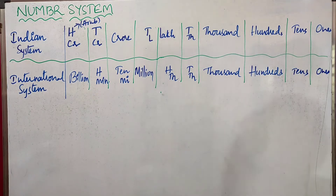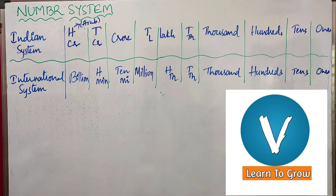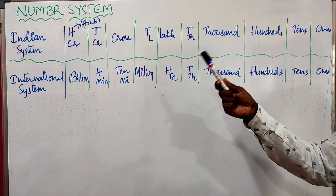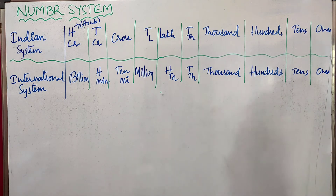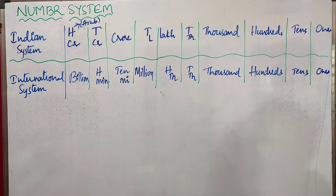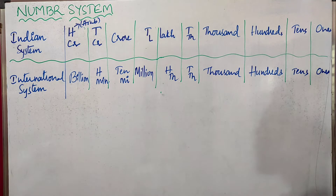Hello everyone, welcome back to our channel Vivan Education. Today we are going to discuss about number system. We are having two types of number system: the Indian system of numeration and the international system of numeration. Today we will consider a 10-digit number and try to read it in the Indian system and international system. Before going to that concept, we will recall the place values of both systems.